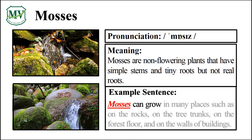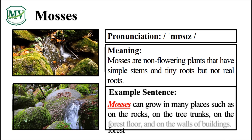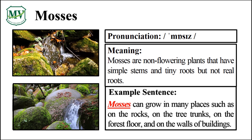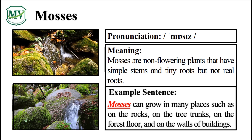Mosses can grow in many places, such as on the rocks, on the tree trunks, on the forest floor, and on the walls of buildings. Can you read the sentence on your own? Wonderful!